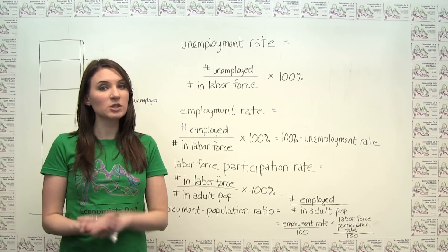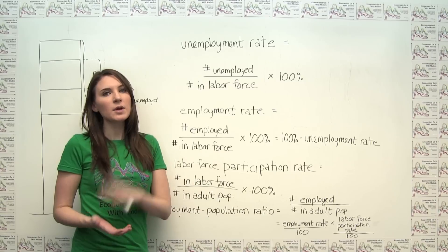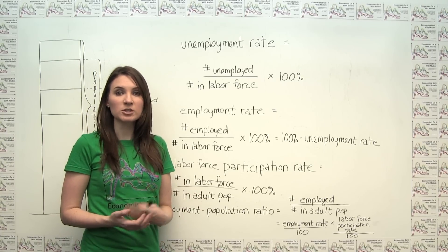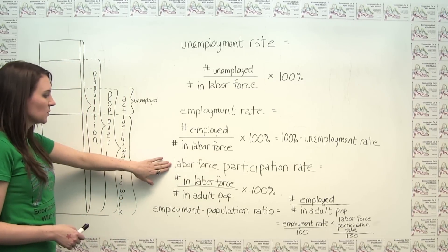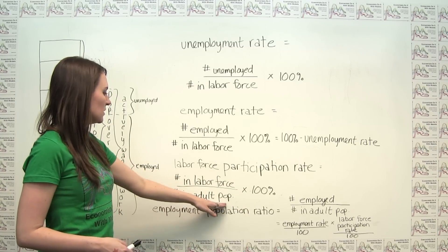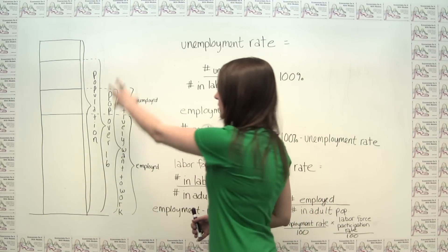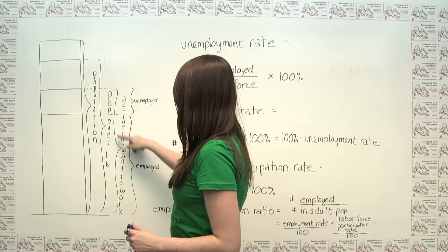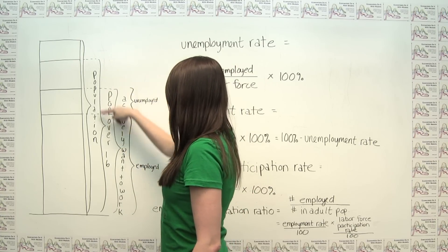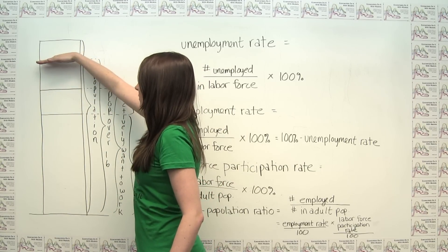Because output per worker is ultimately what determines the standard of living in an economy, it's important to understand not only how many people who want to work are actually working, but also how much of the overall population wants to work. Therefore, economists define the labor force participation rate as the number in the labor force divided by the number in the adult population, times 100%. We can think of this as those actively looking to work divided by the total population that's over 16 years old.